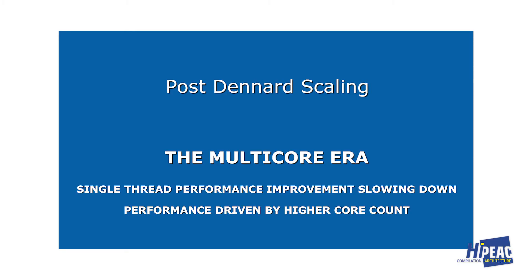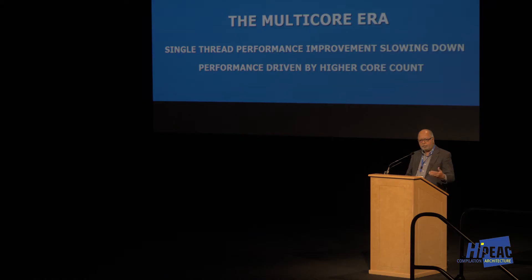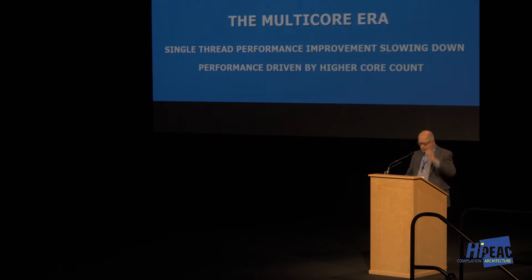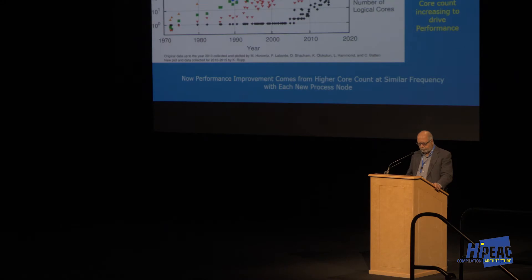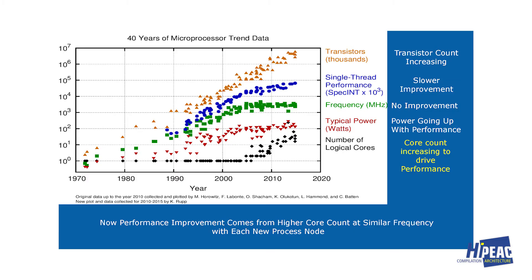After Dennard scaling, we went into the multi-core era. In this era, single-thread performance improvement was slowing down, but we got performance by increasing the core count. The cores had roughly similar performance with small single-thread improvements, but because of the density we were able to put more cores on a single chip.